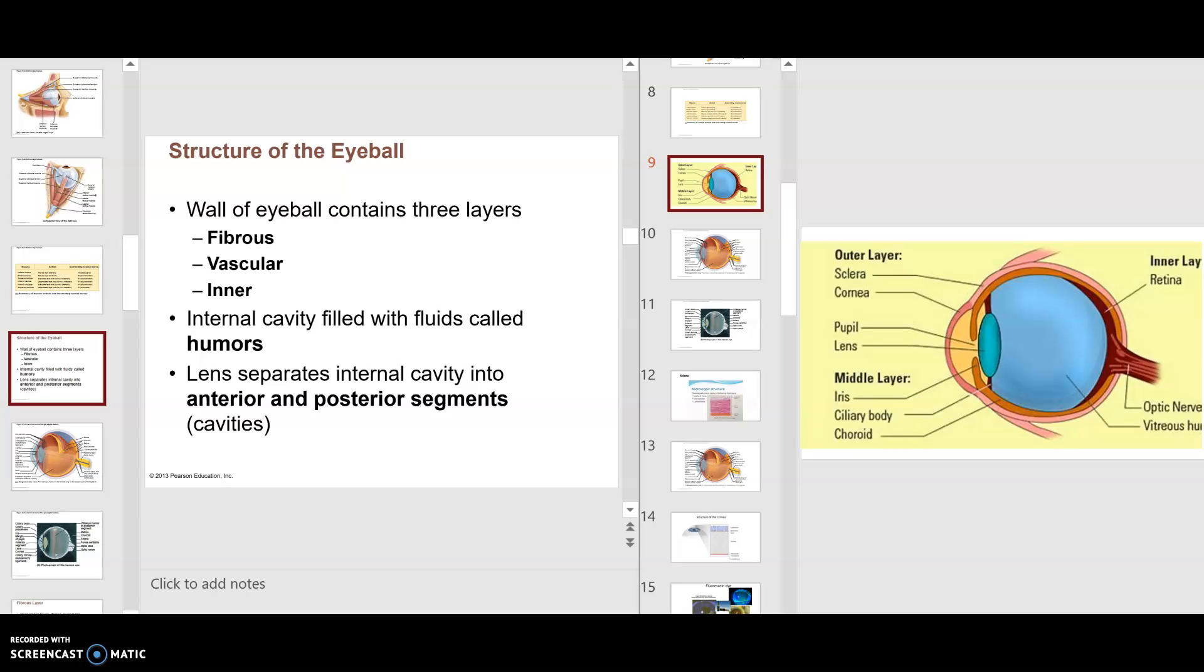Hello, class. In the last video, we looked at the external structures of the eye, the eyelids, eyebrows, things of this nature. With this one, we're looking at the structure of the eyeball.